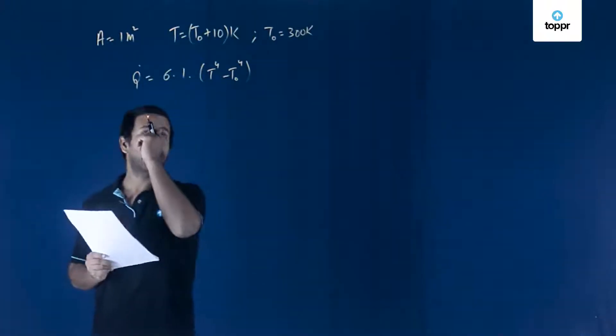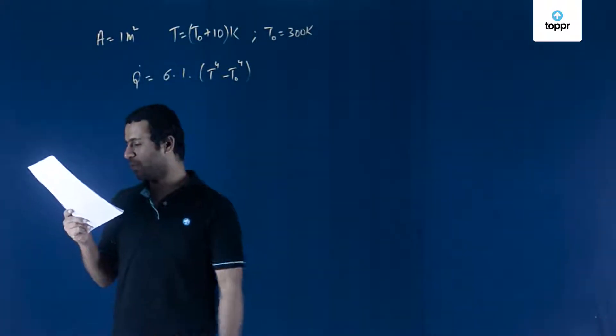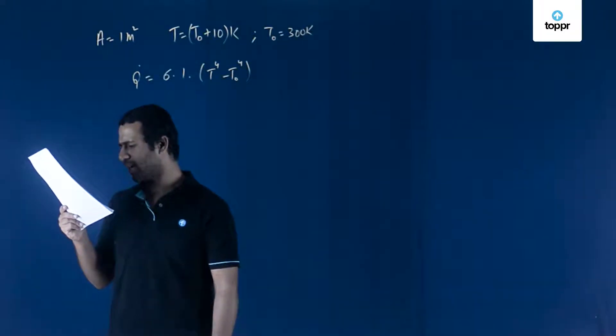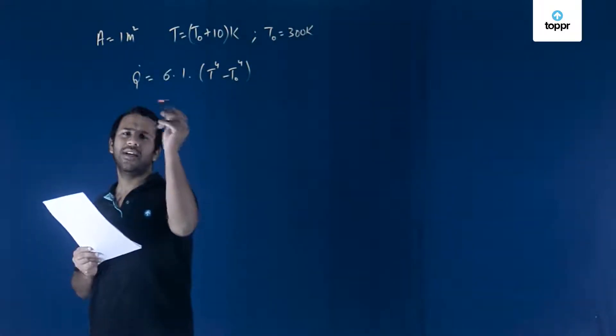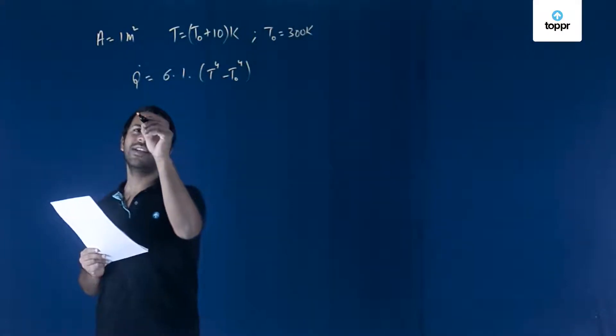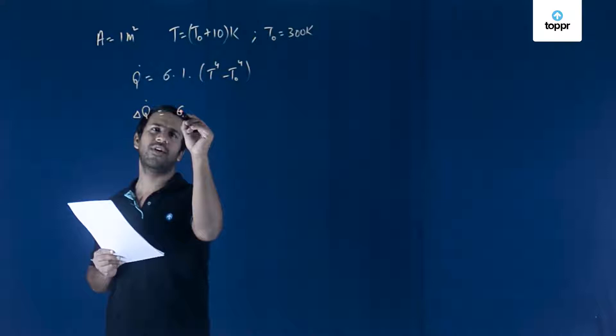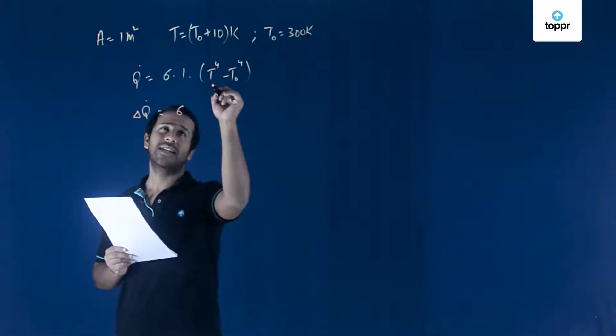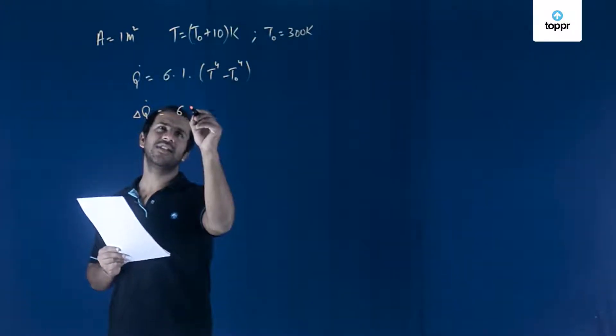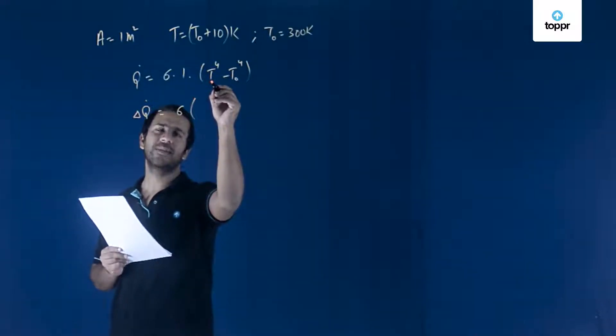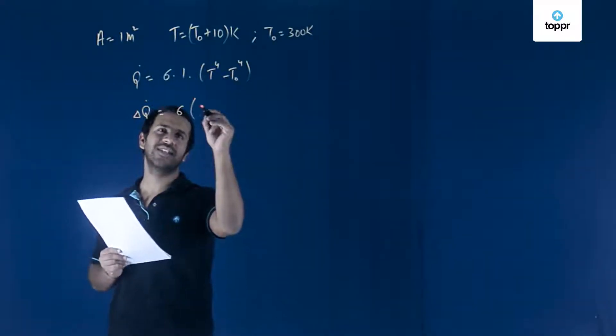Now, you want to find in the first option the amount of change in the heat that is radiated. If we talk about small changes, you could say that delta Q dot is of the form sigma into T, which will be constant. This is T raised to 4, the body temperature. Since that is not changing,